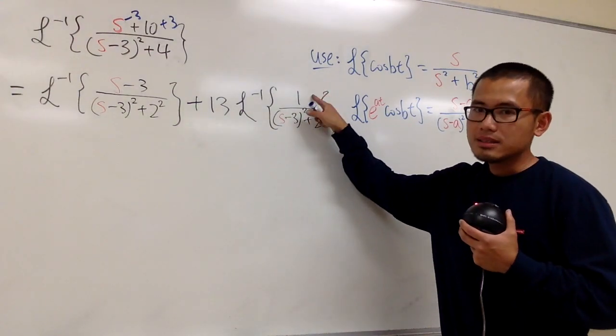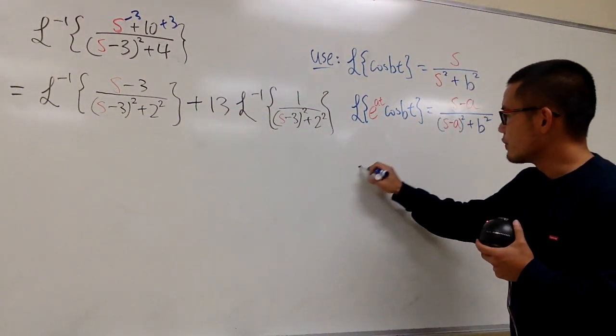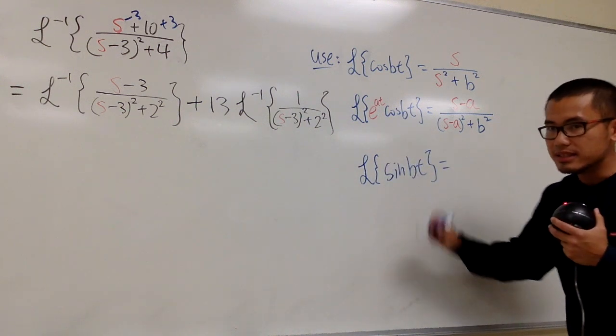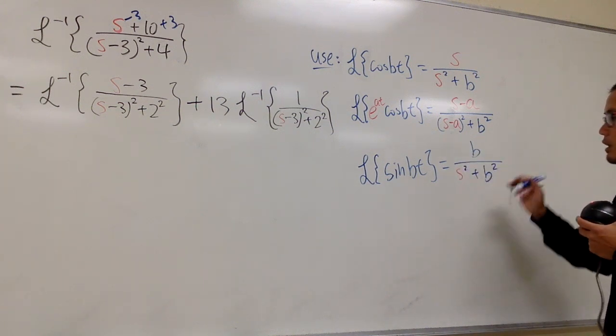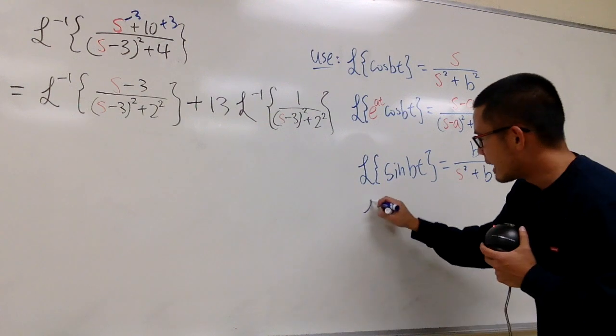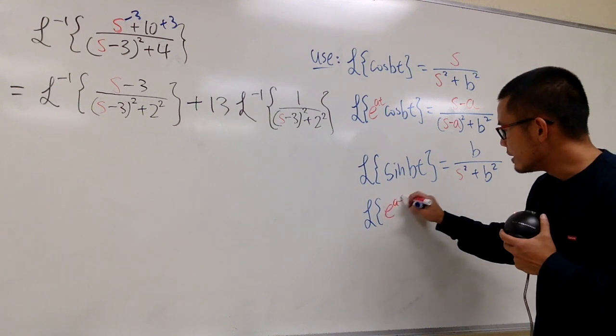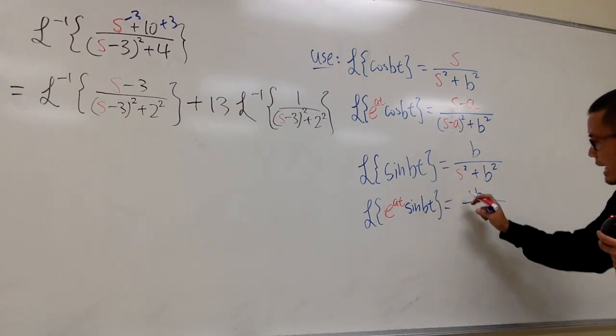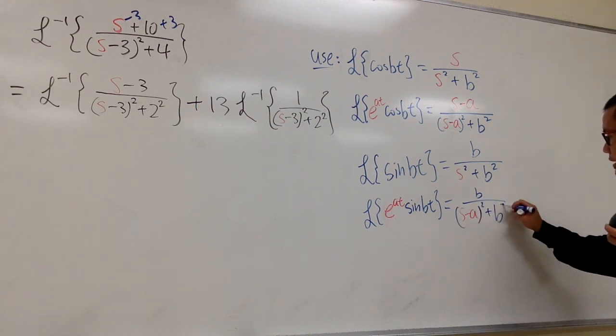We know how to deal with this already because we did that earlier. However, if we have a constant on the top, this is a situation where we have to use sine. Let me write it down as a reminder. The Laplace transform of sine of bt equals b over s squared plus b squared. Once again, we have to shift this in the s world, so we multiply by e to the at. e to the at times sine of bt is going to be b on the top over (s minus a) squared plus b squared.